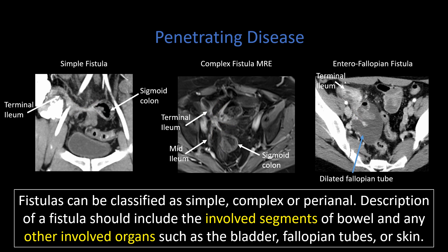When we think about penetrating disease, most commonly we think about fistula. We can classify fistula in multiple different ways. A fistula is really just an abnormal communication between two hollow organs, or a hollow organ and the skin surface. When describing a fistula, it's very important to describe which segments of bowel are involved and which other organs are involved — this can be any organ with a hollow lumen, such as the bladder, fallopian tubes, the vagina, or the skin.